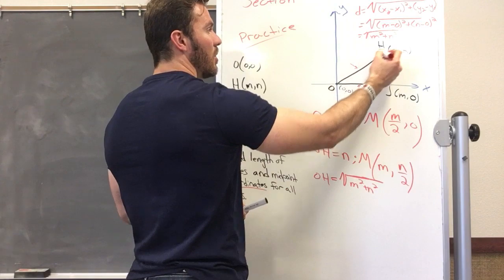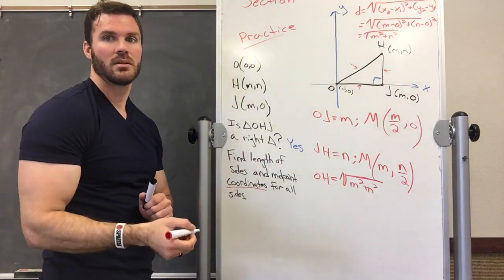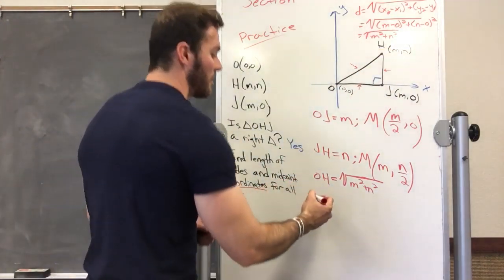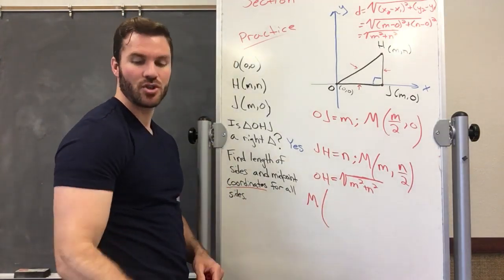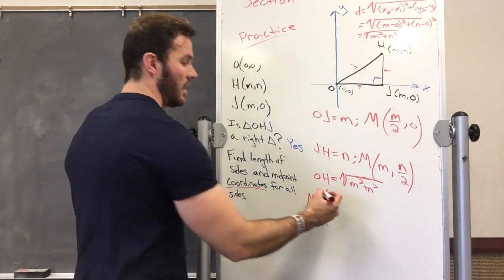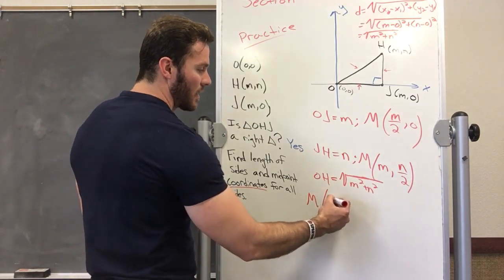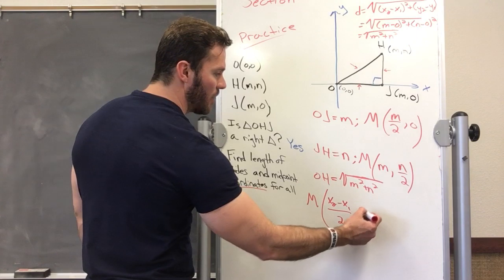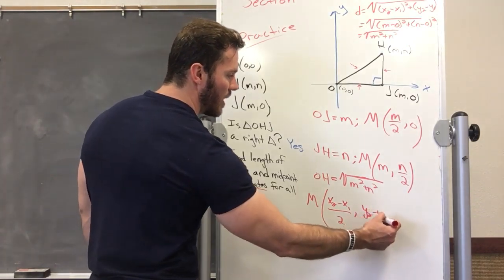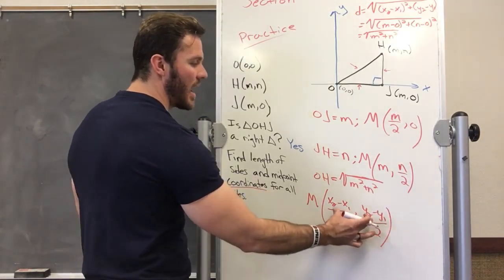Now we need to do the midpoint. The midpoint formula is another formula you should memorize, and it is: (x2 minus x1) over 2, comma, (y2 minus y1) over 2. This gives you an x, y coordinate.